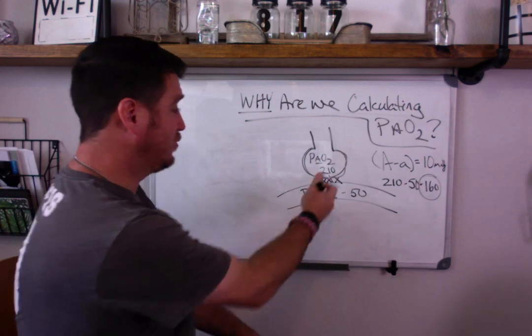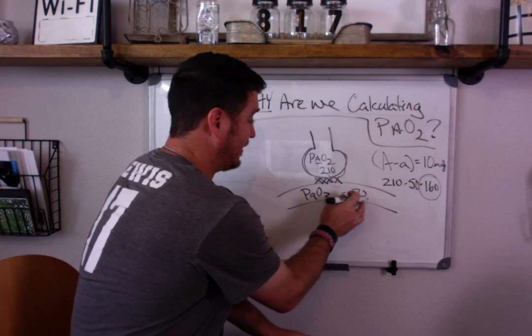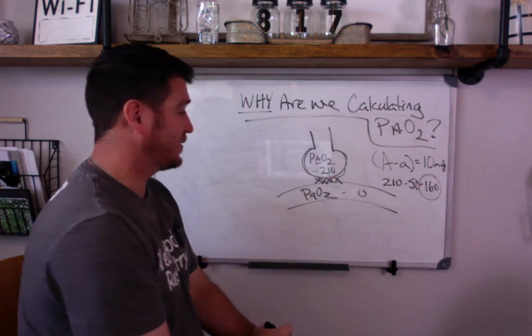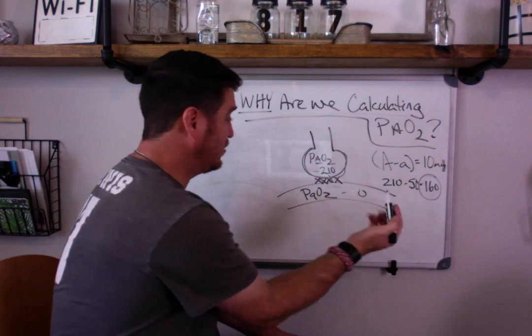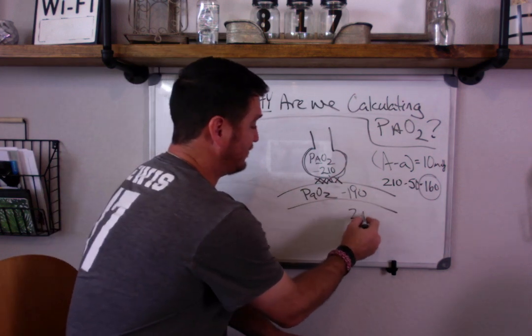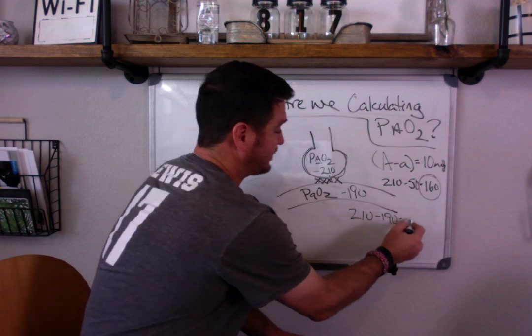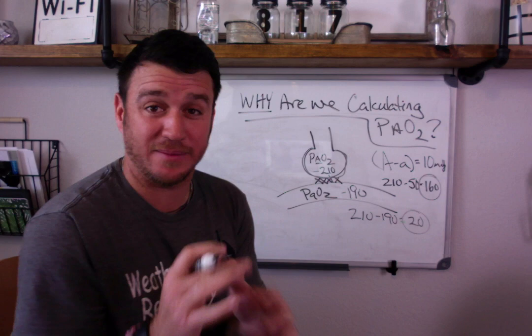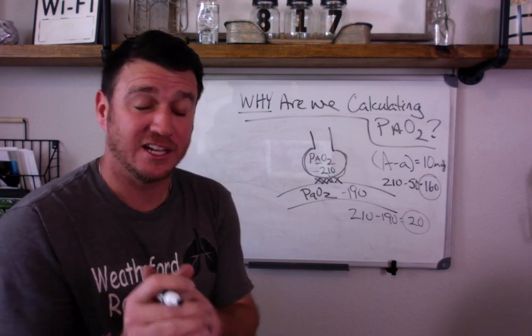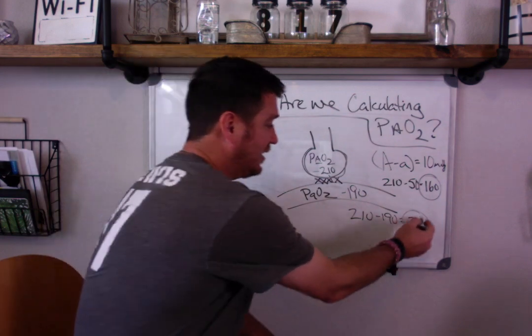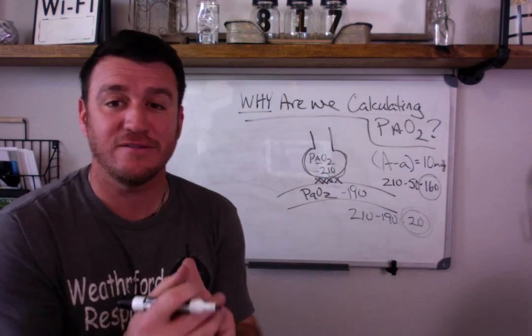If you drew this blood gas right here and you got instead of 50 your alveolar partial pressure of oxygen is 210 but when you run your blood gas you get 190. Now you have 210 minus 190 and you get 20. That's a relatively small number when you're talking about A to A differences, especially when you start adding higher levels of FIO2s. Then look your lungs are working very efficiently.